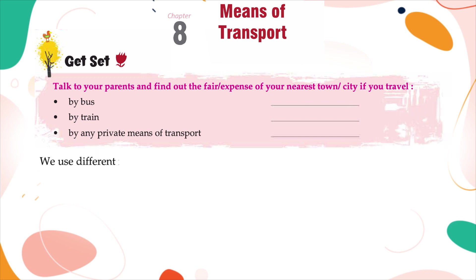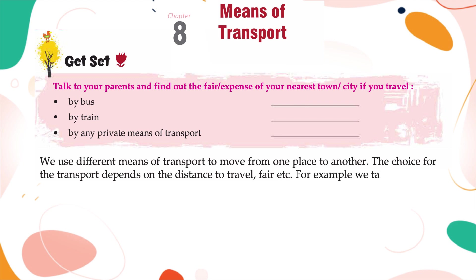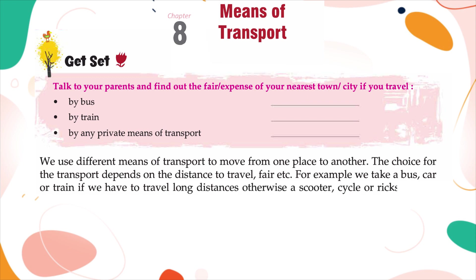We use different means of transport to move from one place to another. The choice of transport depends on the distance to travel, fare, etc. For example, we take a bus, car, or train if we have to travel long distances; otherwise a scooter, cycle, or rickshaw are the best choices for short distances.